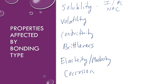Volatility has to do with how well or how much a compound evaporates at a given point. The more volatile a compound is, the more it evaporates. With increasing volatility, you're also going to have weaker intermolecular forces, because it's easier for it to break apart and evaporate.